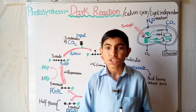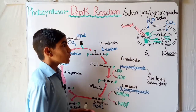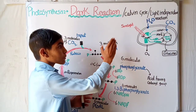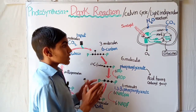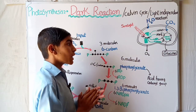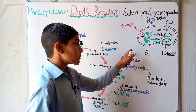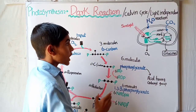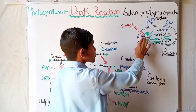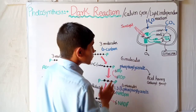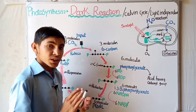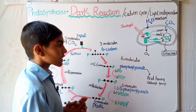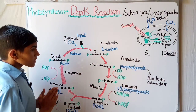That is the dark reaction. In the previous lecture we talked about the light reaction, in which we studied that in the presence of sunlight, in the granum of the chloroplast, the plant prepares ATP and NADPH, and also the plant splits its H2O and gives us O2 as a byproduct, which is then inhaled by all living organisms like animals.